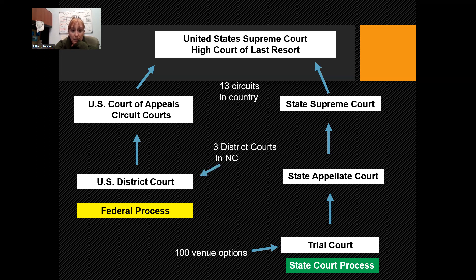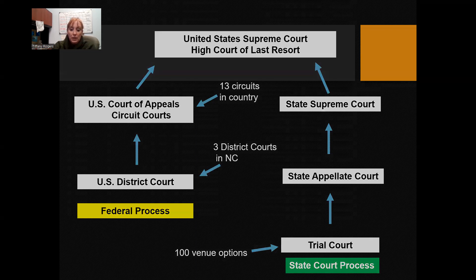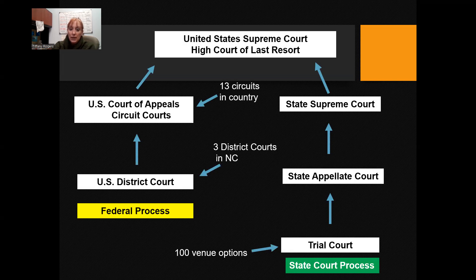If you're convicted and disagree with the decision in district court, you can appeal to the circuit courts. We have 13 circuits in the country. You need to know which circuit North Carolina is in because we're going to look at that when we start to apply laws. From the court of appeals, you can appeal to the Supreme Court, but they select which cases they want to hear.